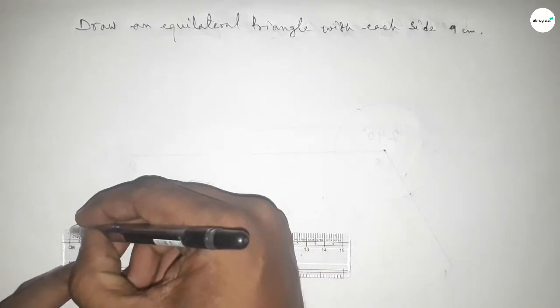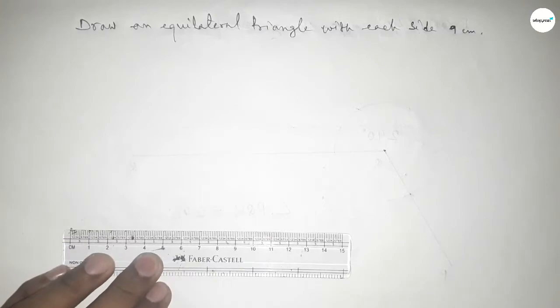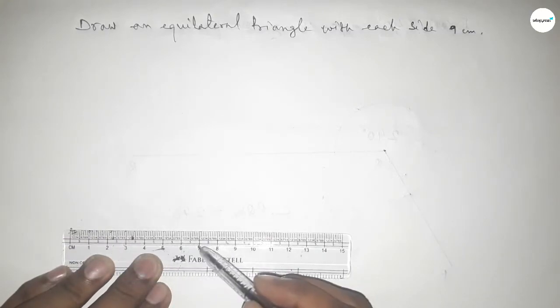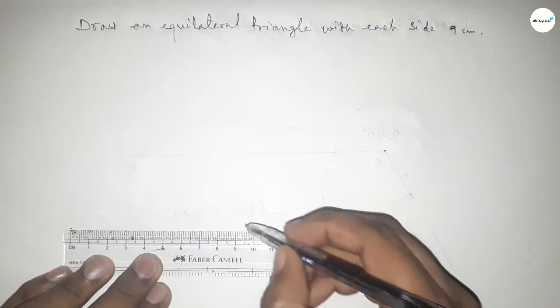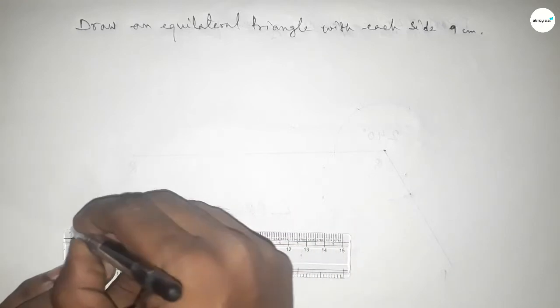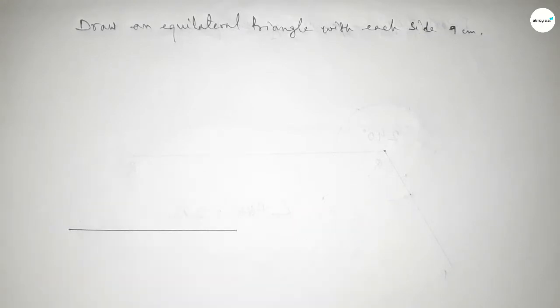This is starting at 0, then 1, 2, 3, 4, 5, 6, 7, 8, and this is 9. So first, draw a line of length 9 centimeters, and label this point A and this point B.